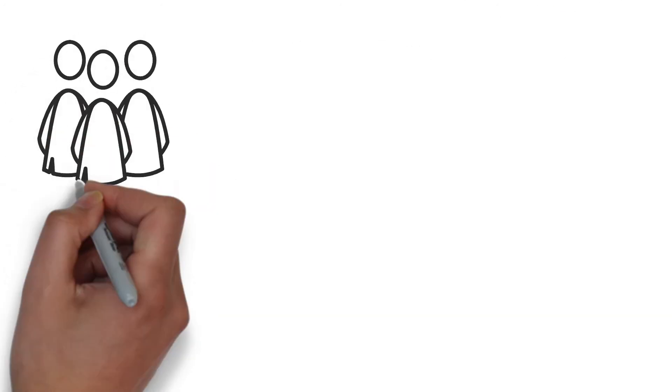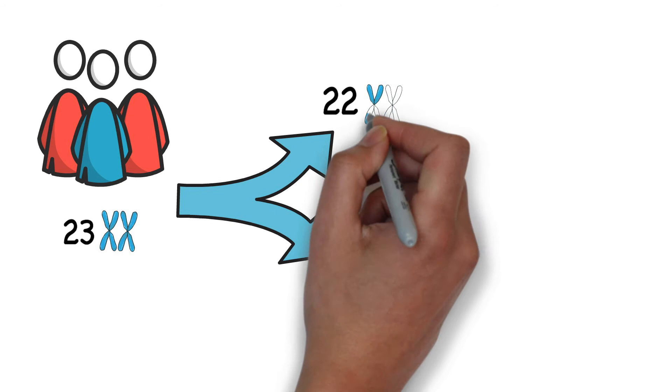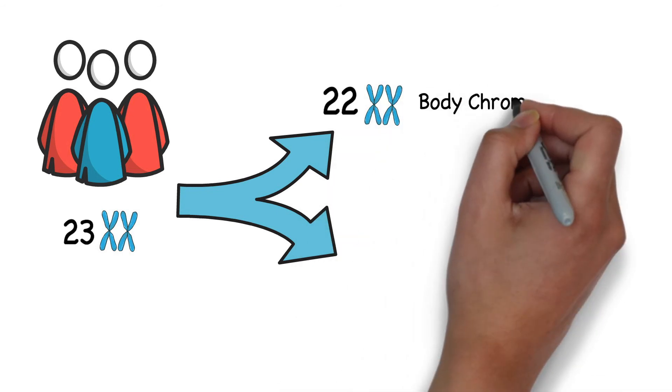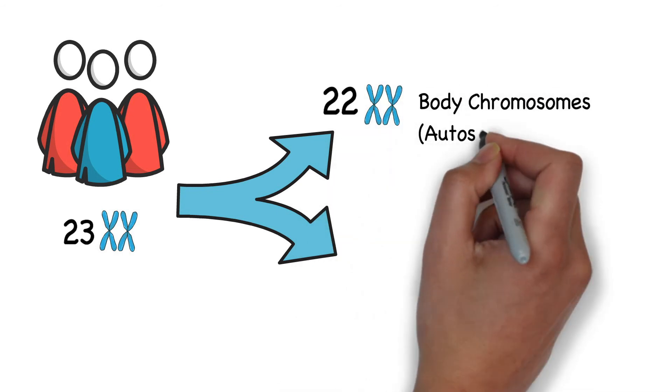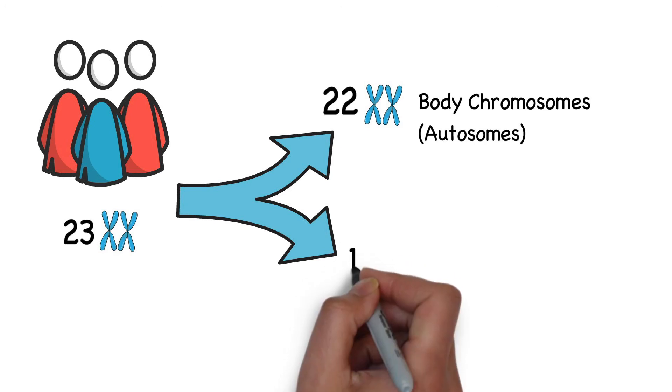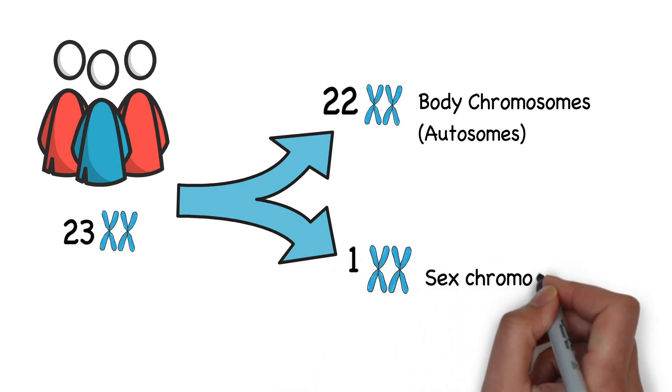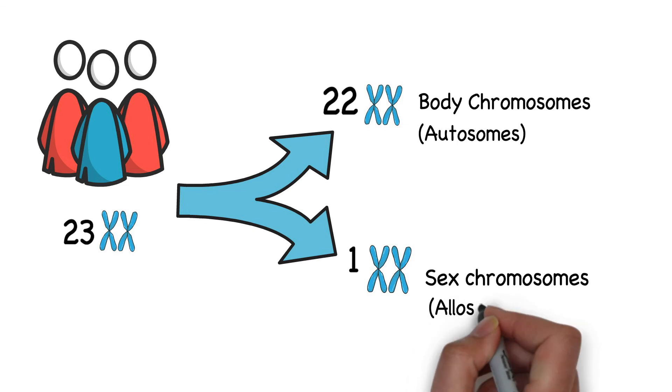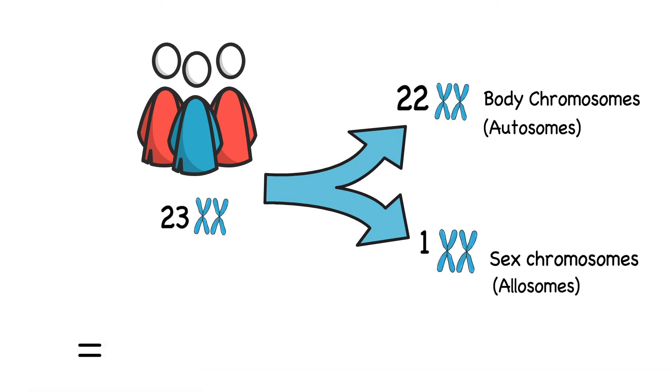As humans, we have 23 pairs of chromosomes, out of which 22 pairs are body chromosomes, also called as autosomes, whereas one pair is of the sex chromosome, which is also called as allosomes. These 23 pairs of chromosomes means that there are 46 individual chromosomes per cell.